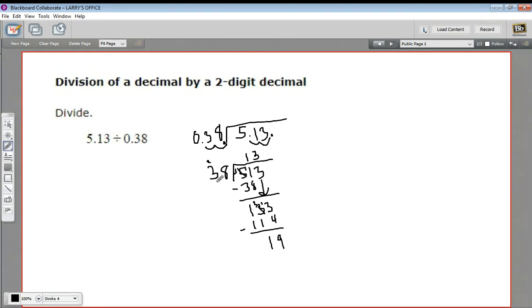19 is less than 38. So we could say 13 with a remainder of 19. But we want actually an exact decimal answer. So what we're going to do is we're going to put a decimal point here and add a 0. And I'm going to put a decimal point up here at the same time. Now this 0 is going to come down just like we would if we were carrying on with a long division.